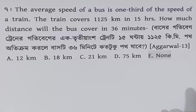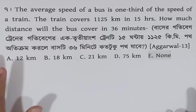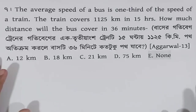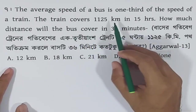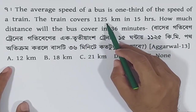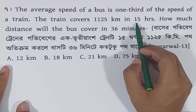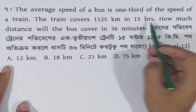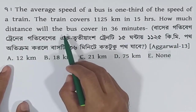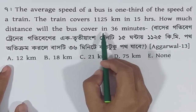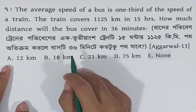The next question: the average speed of a bus is one-third of the speed of a train. The train covers 1,125 km in 15 hours. How much distance will the bus cover in 36 minutes?